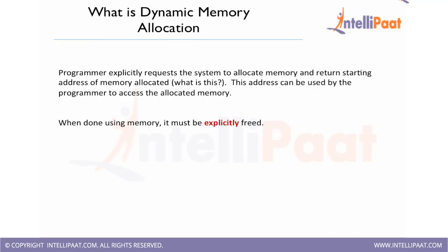So what is the starting address of memory allocated? Suppose we have asked to assign 10 bytes of memory — the function we are calling will give us the address of the first byte. When we use dynamic memory allocation, we should take very good care of freeing the memory explicitly. We should always be careful to free the memory so we will not run out of memory when we run large programs. When not in use, the memory has to be freed.